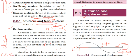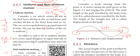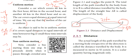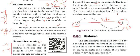Distance and displacement. What is the distance? What is the displacement? We can go from point A to point B. If we go from A to B, the shortest distance between the two points is the displacement. That is the straight line — that is the displacement.